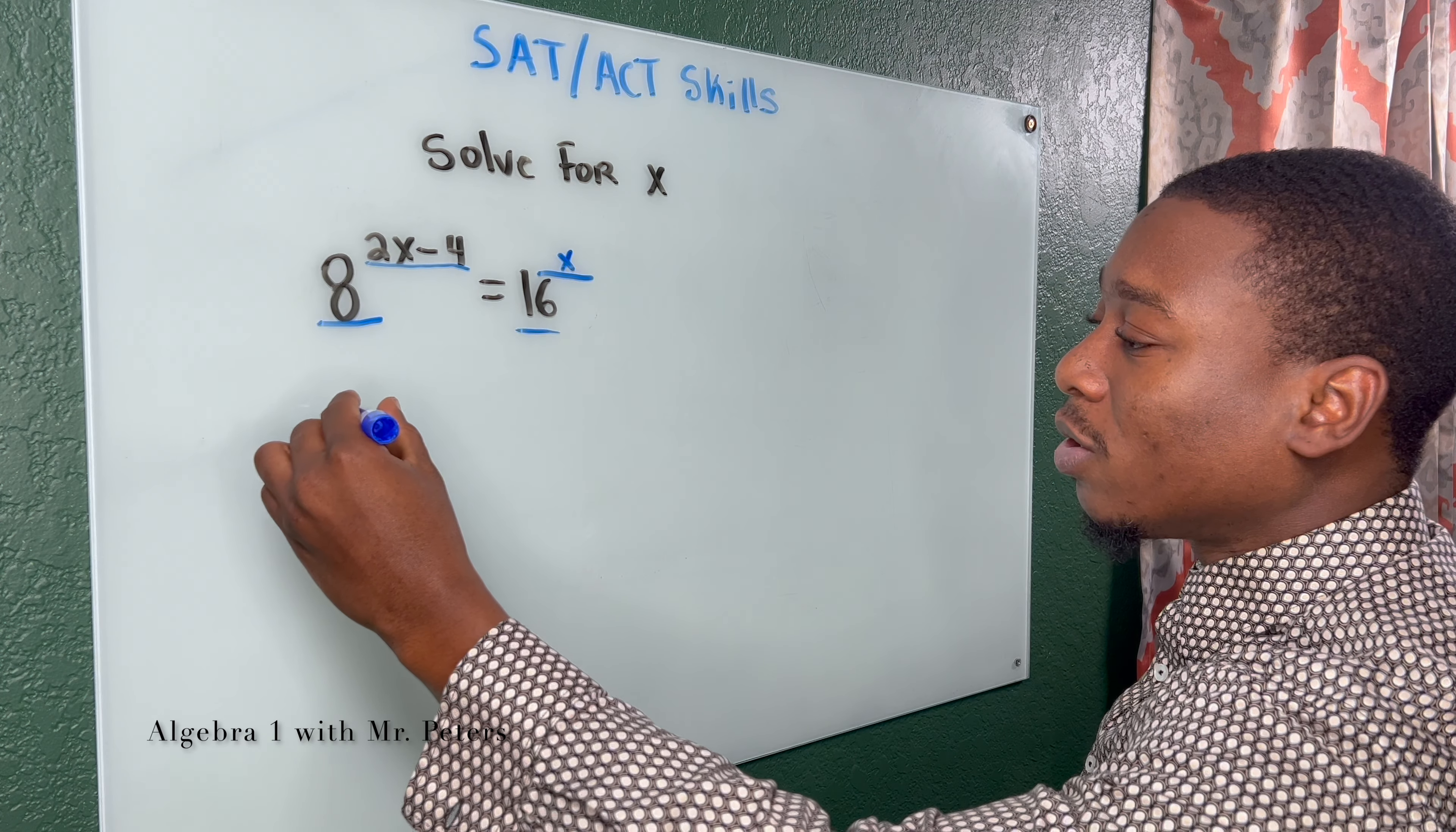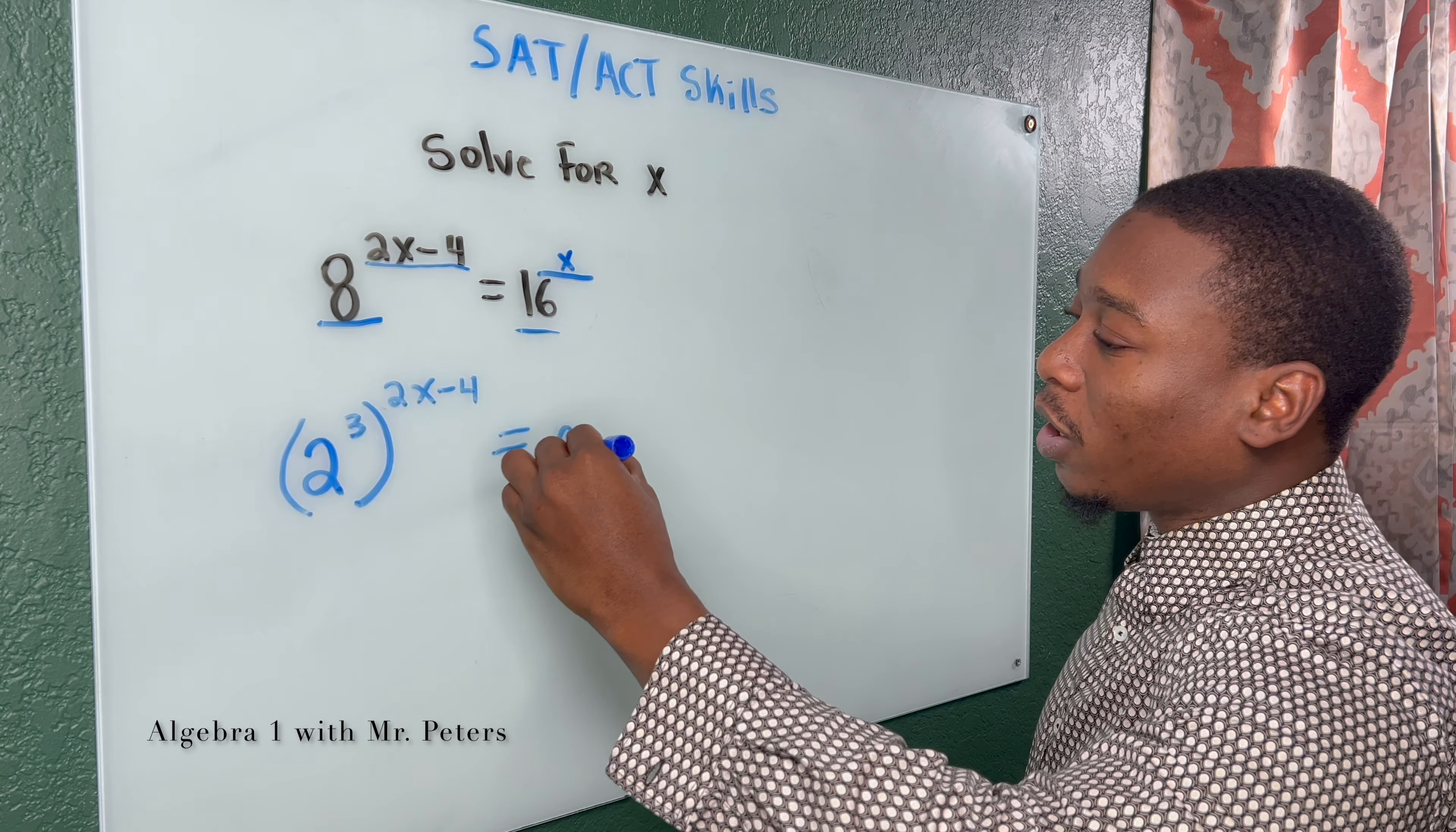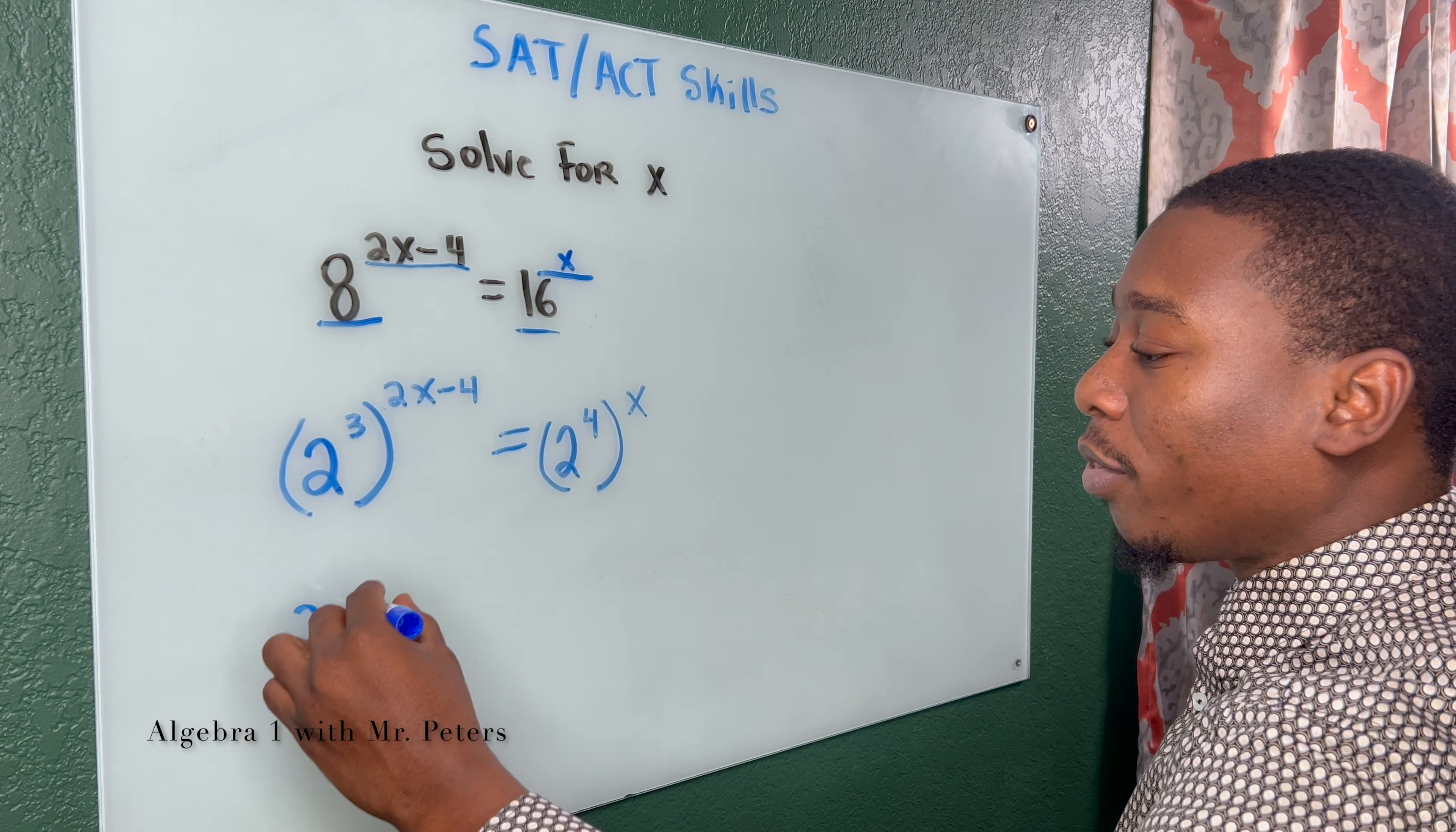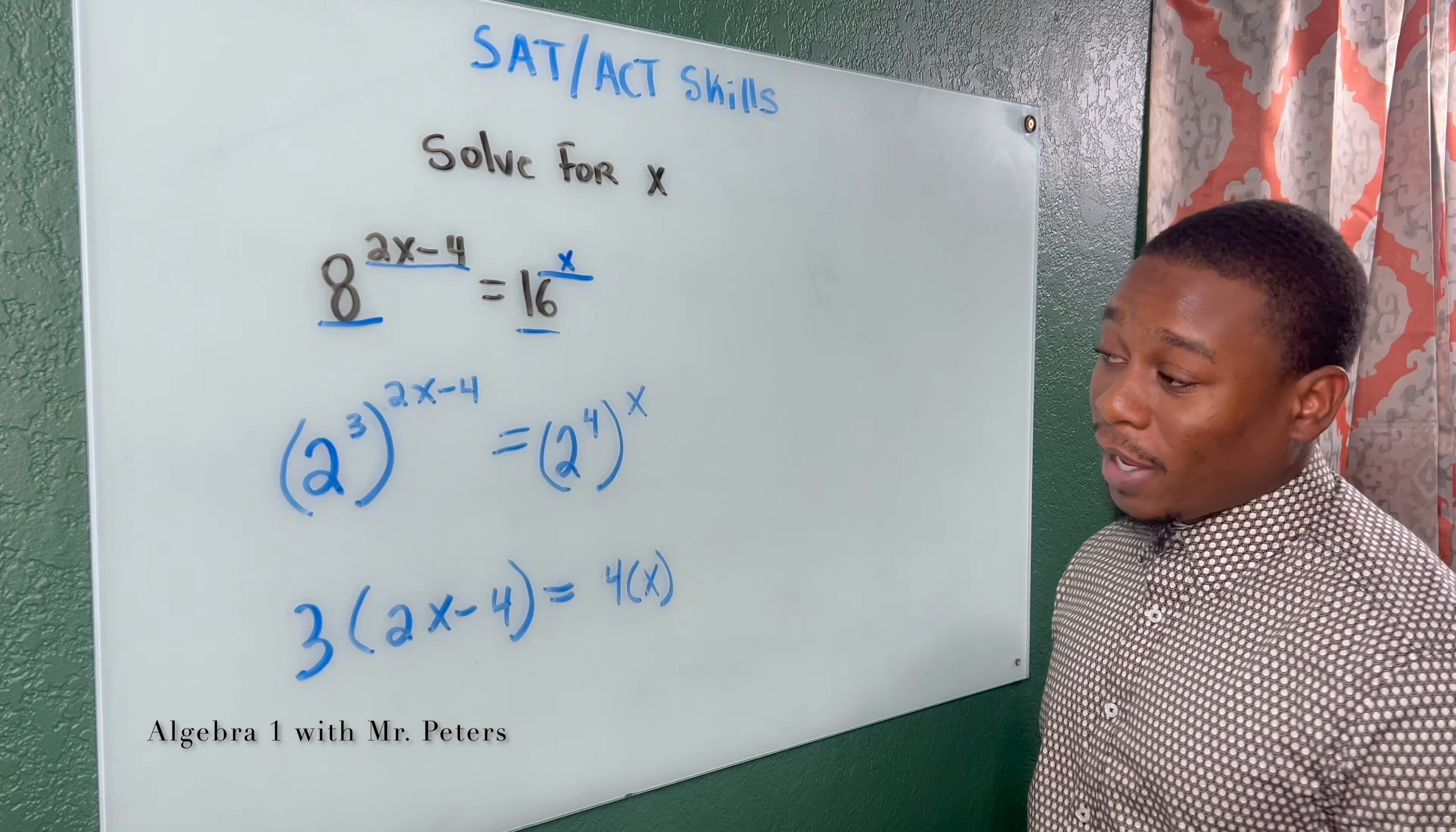So if I rewrite this, 2 to the third power is the same thing as 8, and then we have 2X minus 4 on the outside. And then when we do 16, we have 2 to the fourth power, and that would be the same thing. Now at this step, what we're going to do is drop our base, and we're going to create an equation. So now I have 3 times 2X minus 4 is equal to 4 times X. And we could solve for X at this point.